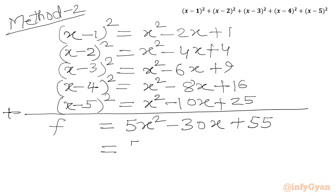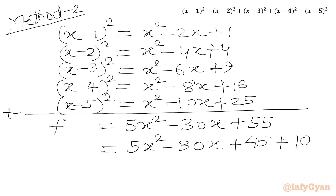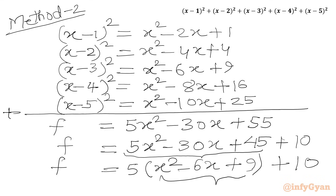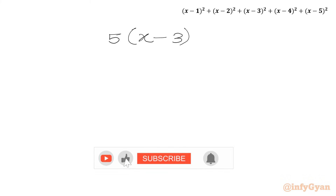Now we can write f = 5x² - 30x + 55. We split 55 as 45 + 10 and take 5 common from the first three terms: 5(x² - 6x + 9) + 10. This is a perfect square, so f = 5(x-3)² + 10.